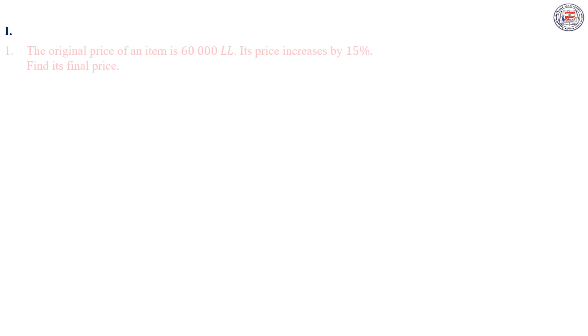Please open your books on page 38 in order to solve number 1. Part 1: The original price of an item is £60,000. Its price increases by 15%. Find its final price.